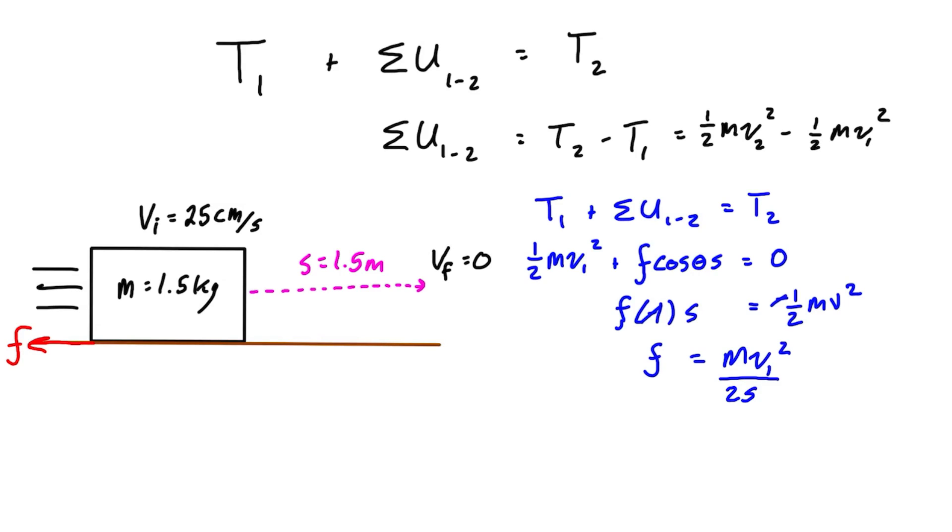So the mass is 1.5 kilograms times the velocity, which is 0.25 meters per second—it has to be in meters per second—that's all squared, and this is over 2 times 1.5 meters for s. So that's going to give us a friction force of 0.03125 newtons. So that's the first part of the question. And if we also